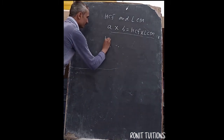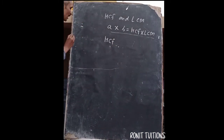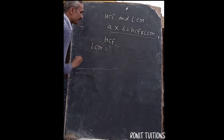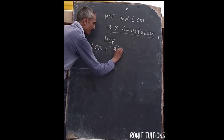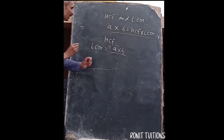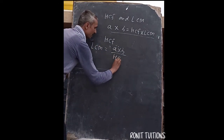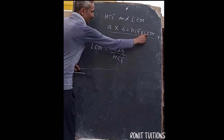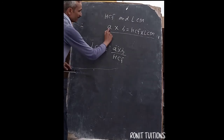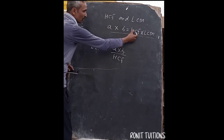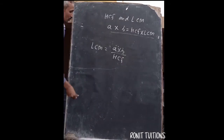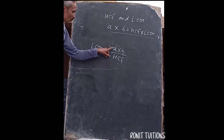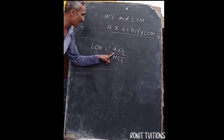Now, suppose we know the HCF and we want to find the LCM of any two given numbers. From the formula A × B = HCF × LCM, we can rearrange to get: LCM = (A × B) / HCF. So if you know the HCF, you can find the LCM by dividing the product of the two numbers by the HCF.